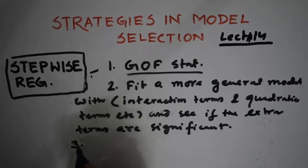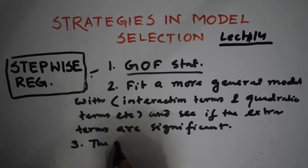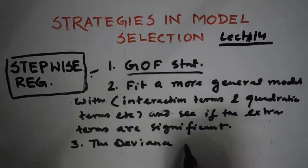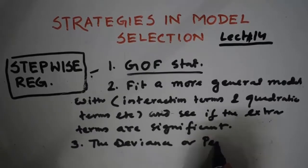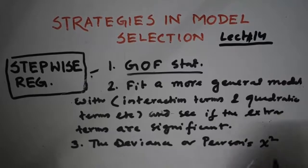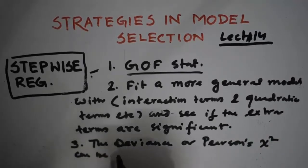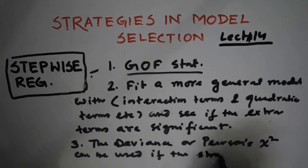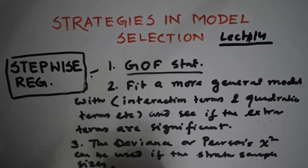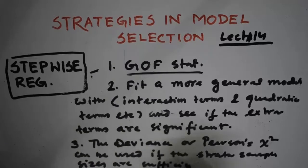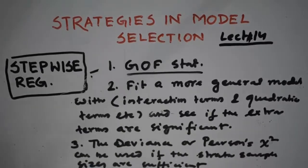Next, the deviance or Pearson's chi square can be used if the strata sample sizes are sufficient, that is more than equal to 75% of Ni greater than equal to 10, which I already discussed in my previous video.